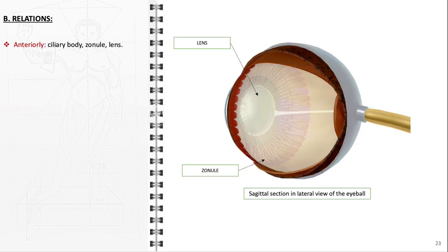The anatomical relations of the vitreous body within the eye are crucial to its function and the overall ocular health. Situated centrally in the eyeball, it has important neighboring structures. Anteriorly, the vitreous body is closely associated with the ciliary body, the zonule (also known as zonular fibers), and the lens.